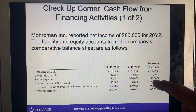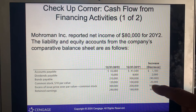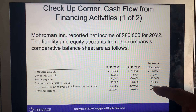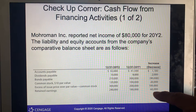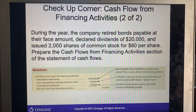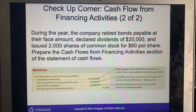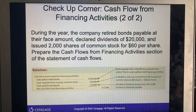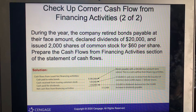Bonds payable decreased by $90,000. Common stock increased, and the excess of issue price over par value of common stock was an increase of $100,000. Retained earnings also increased. So we would write: $90,000 paid to retire bonds, cash received from issuing common stock $120,000, and cash paid for dividends $18,000 — giving net cash flow from financing activities of $12,000.